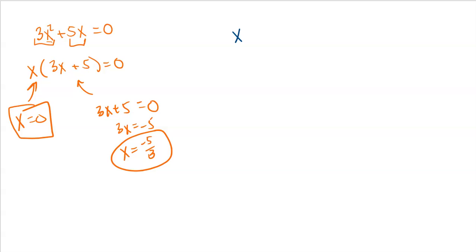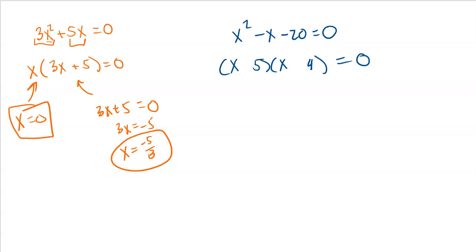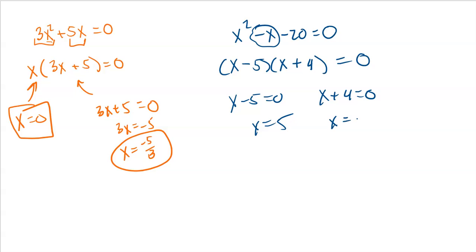We can step up our factoring with trinomials. For a problem like x² - x - 20 = 0, we can use factoring with the zero product property. x² breaks down to x times x, and 20 breaks down to 5 times 4. To get a negative x in the middle, we need -5 and +4, giving (x - 5)(x + 4) = 0. One of those factors must equal zero, making solving really simple. We're going to use these exact same ideas to solve trigonometric equations.